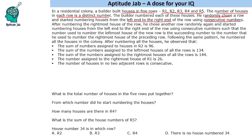After numbering the right-most house, he chose another row randomly and started numbering houses from left-end to right-end of that row using consecutive numbers, such that the number used for the left-most house of the new row is the succeeding number to the one used for the right-most house of the preceding row.